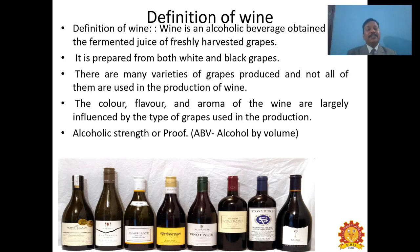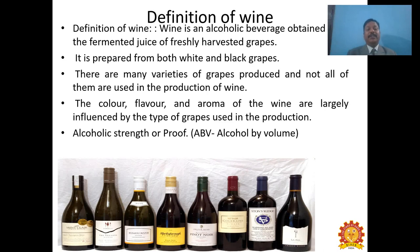Definition of wine: wine is an alcoholic beverage obtained from the fermented juice of freshly harvested grapes. It is prepared from both white and black grapes. From white grapes, you get white wine; from black grapes, you can get red wine and rosé wine. Not all varieties of grapes are used in wine production — the colour, flavour and aroma of wine are largely influenced by the types of grapes used.